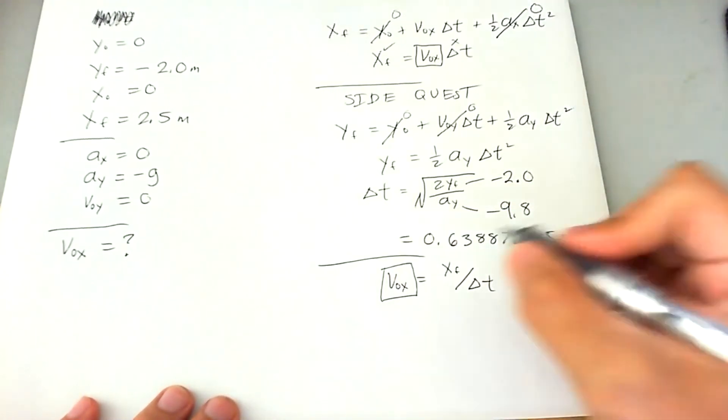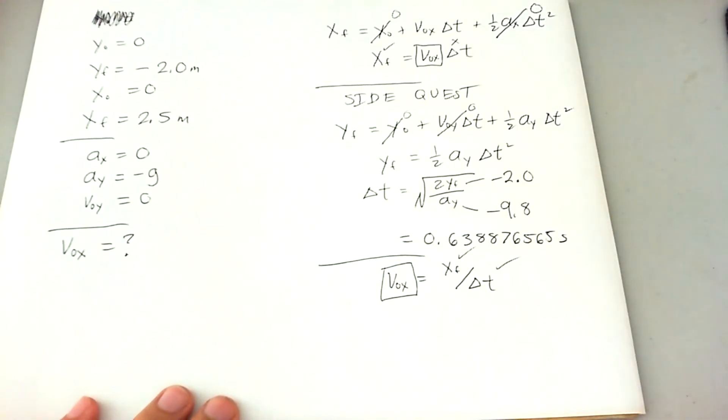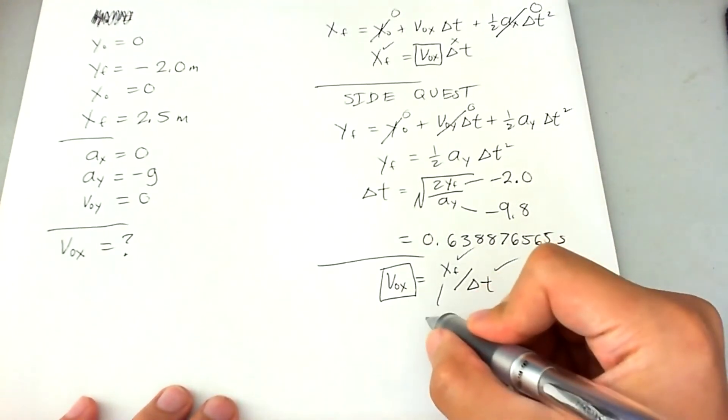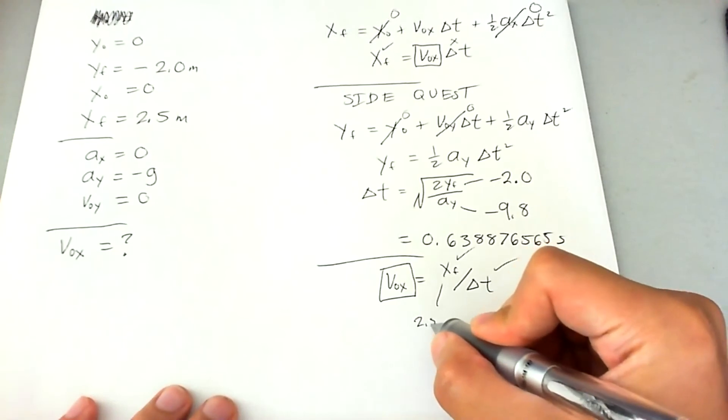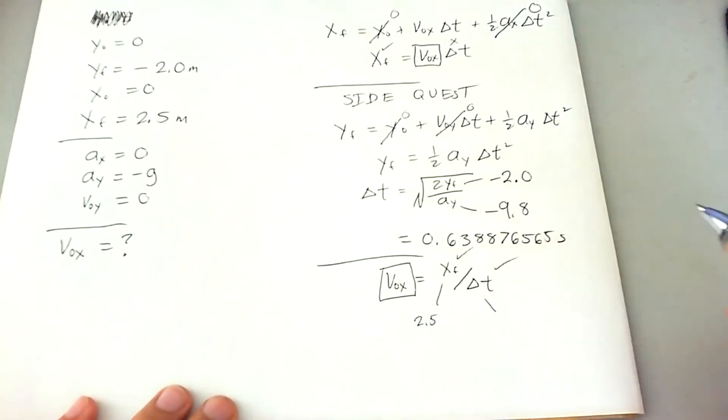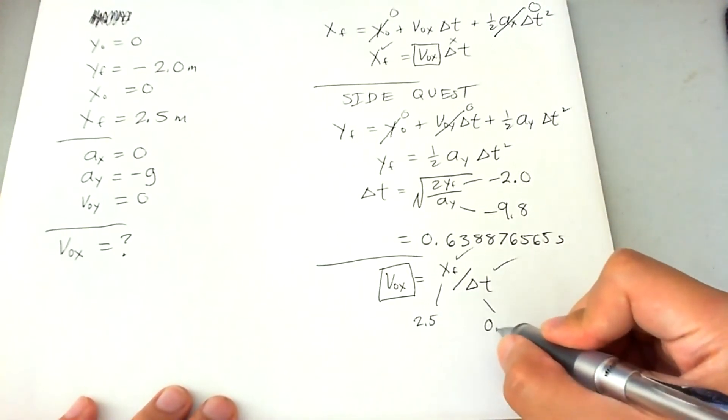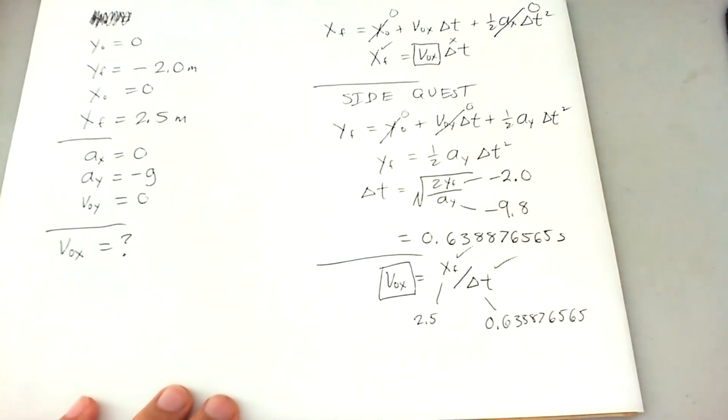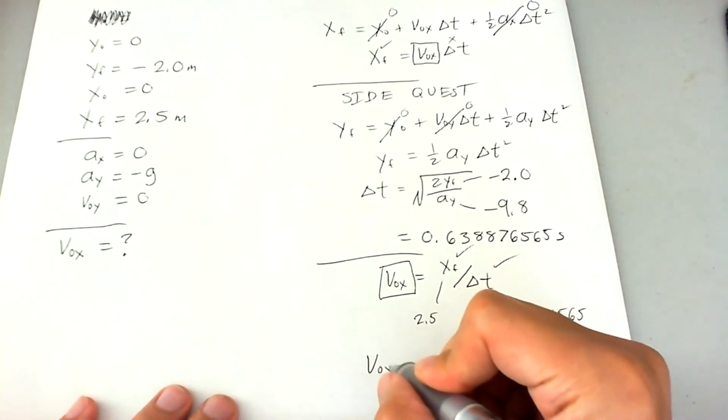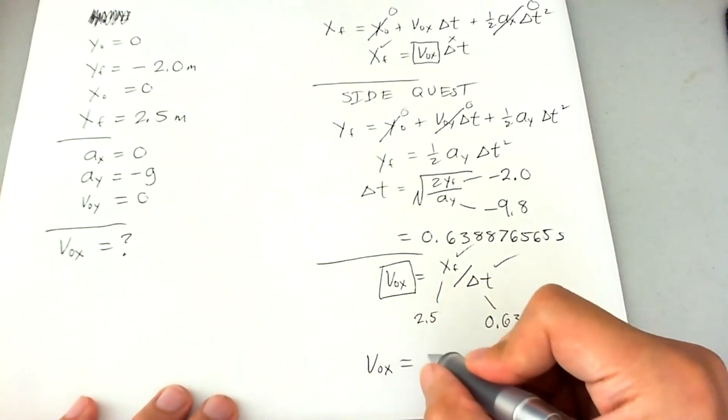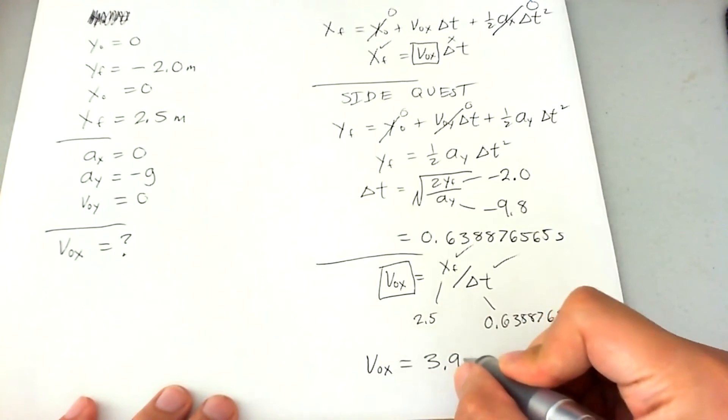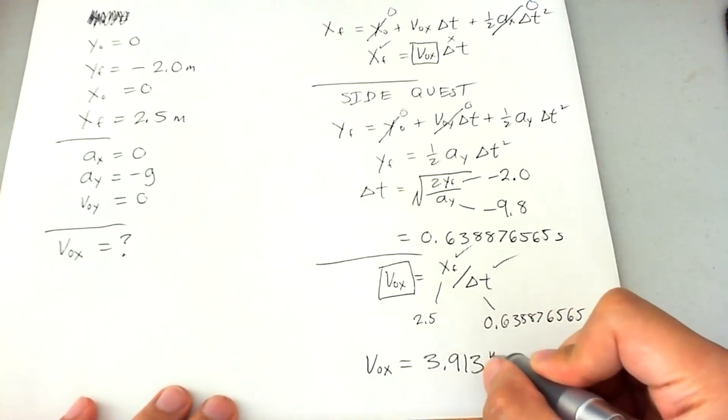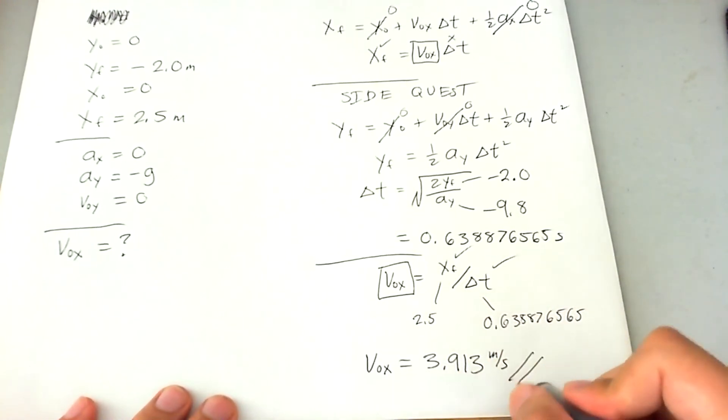We need to know this. We know this and we know that. X final is going to be 2.5 meters. And delta T is going to be 0.63876565. Plugging it into your calculator, you're going to get finally 3.913. And that's a good place to stop with 4 sig figs.